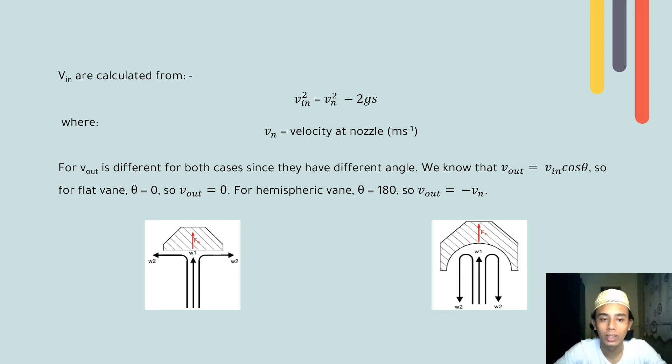So for flat vane, θ is equal to 90°. So V_out is equal to 0, since cos 90° is 0. For hemispheric vane, θ is equal to 180°. So V_out is equal to negative V_in, since cos 180° is negative 1.